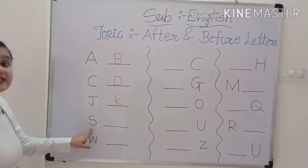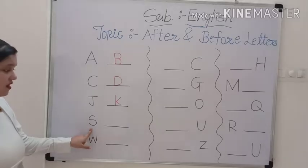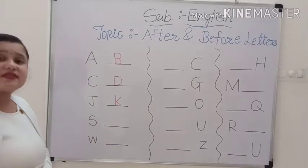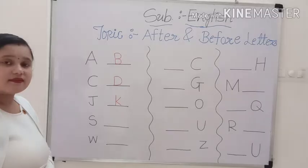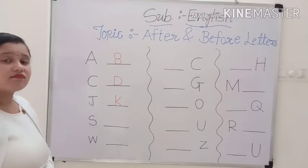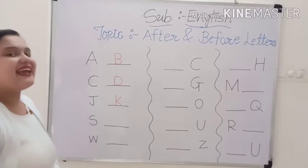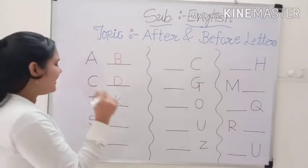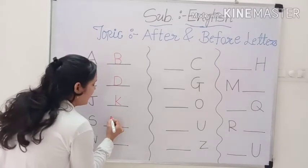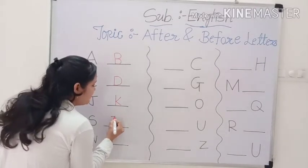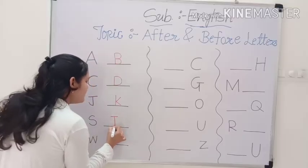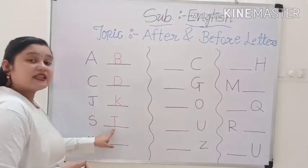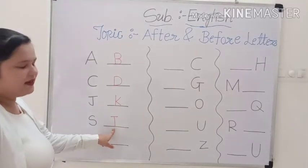This is capital S. Now, which letter comes after S? Capital T. And how to write T? First we make a sleeping line. After that we make a standing line — makes capital T. Very good.